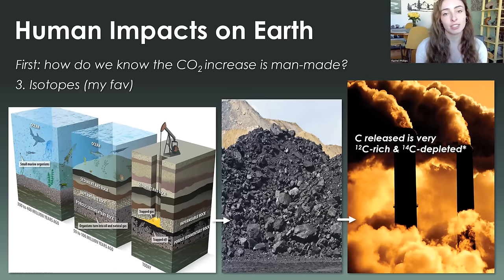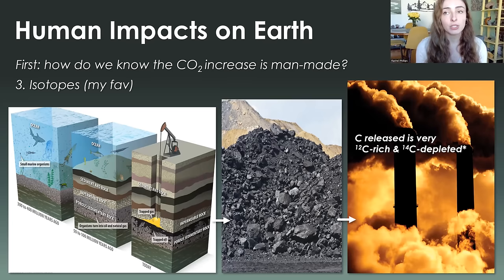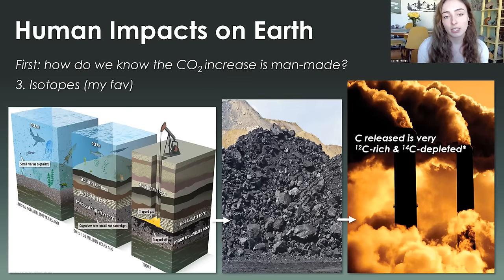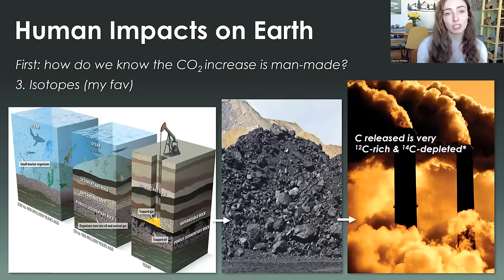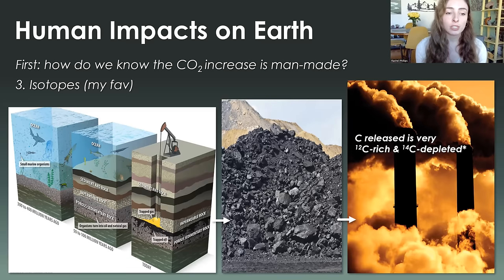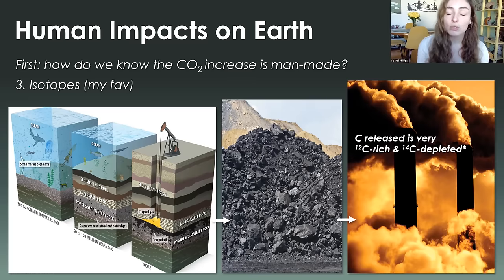The third reason — my favorite — is isotopes. There are three isotopes of carbon that exist. Isotopes are different forms of the same element; the only difference between them is their number of neutrons. Carbon-12 contains six neutrons, carbon-13 contains seven, and carbon-14 contains eight. These isotopes are useful for tracking where carbon goes because they fractionate — they behave differently when transferred through different systems on Earth. For example, photosynthesizing organisms preferentially take up light carbon, carbon-12, over carbon-13.